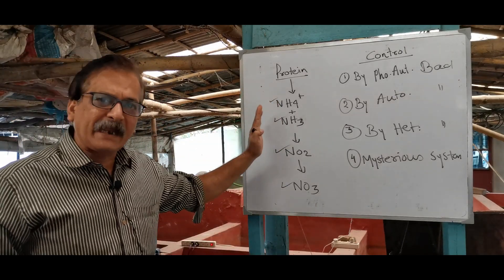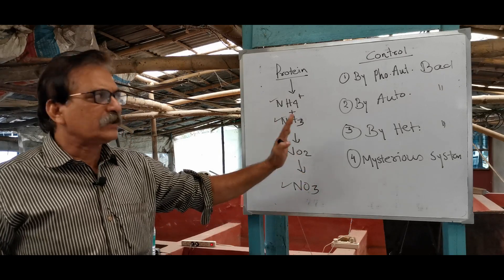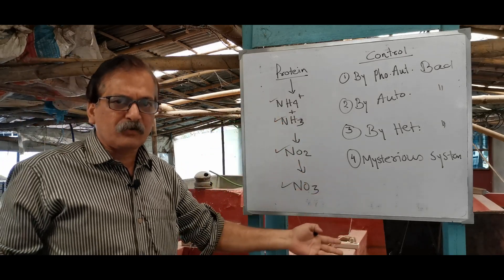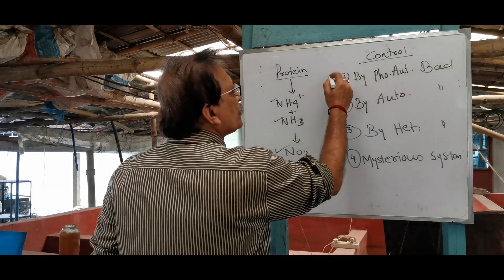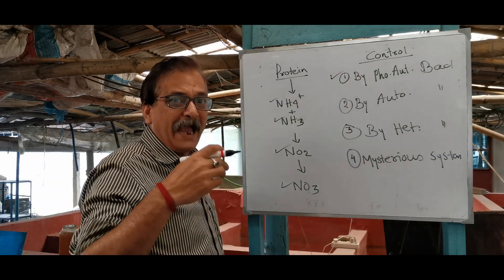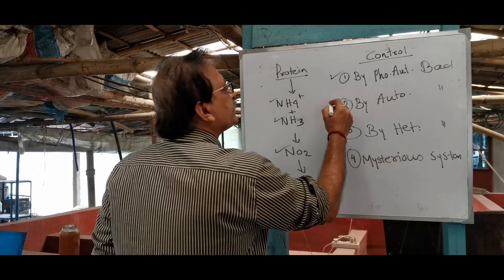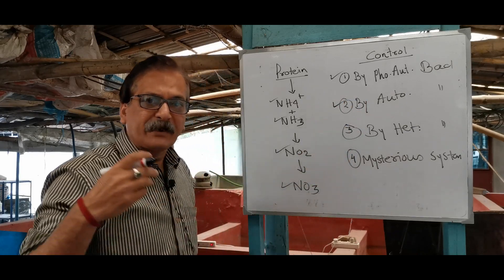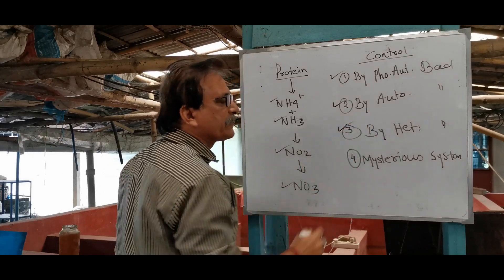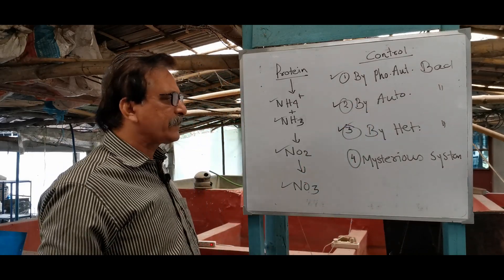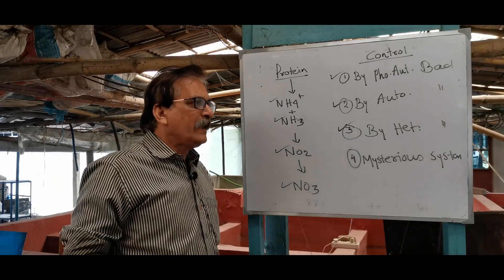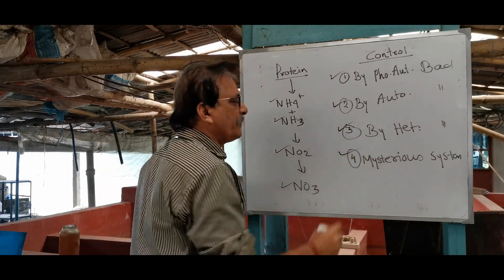we will take our tank and test our tank. The first is phototrophic bacteria and algae. The second is autotrophic bacteria and nitrifying bacteria. The third is heterotrophic bacteria and the Bacillus group bacteria.